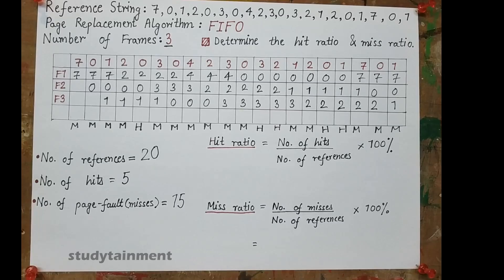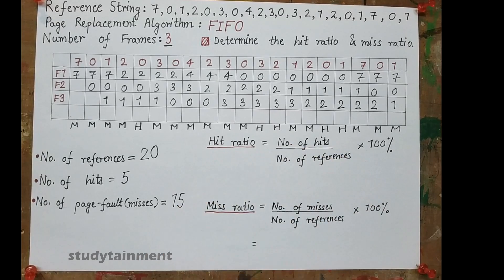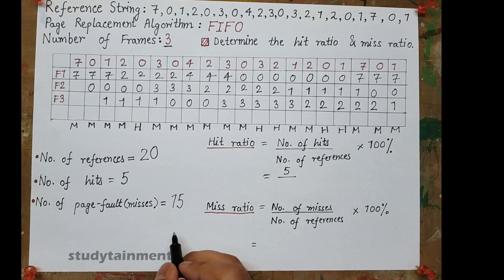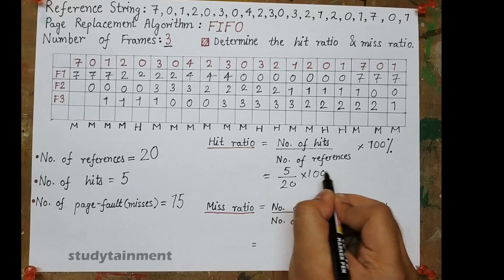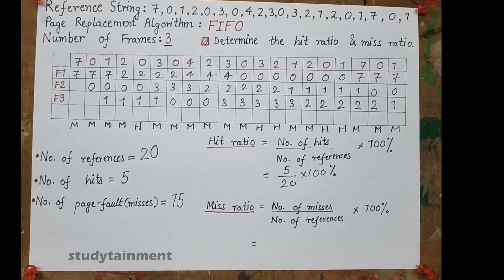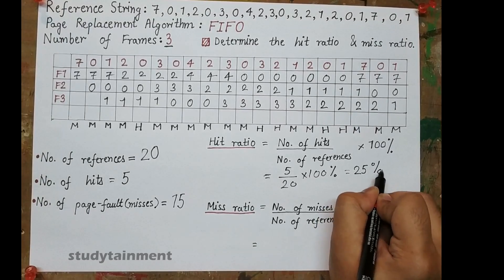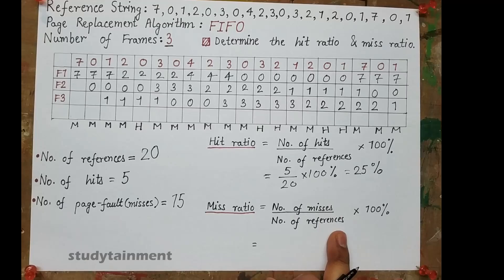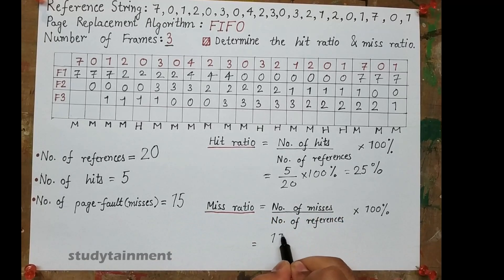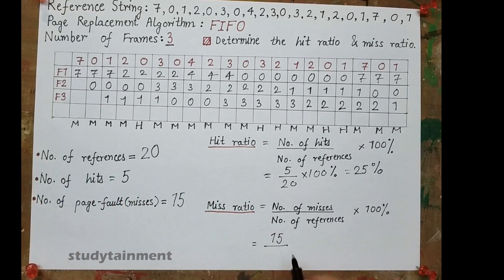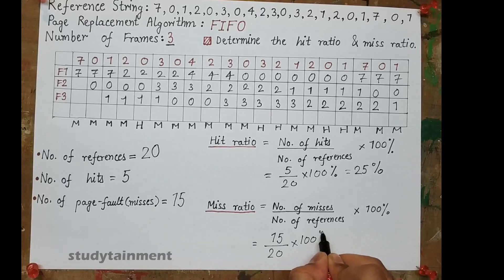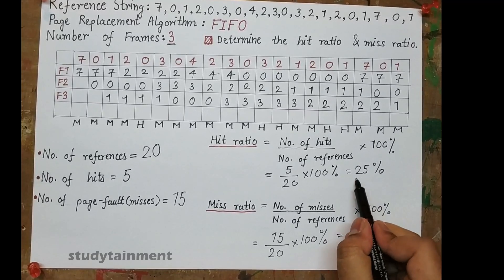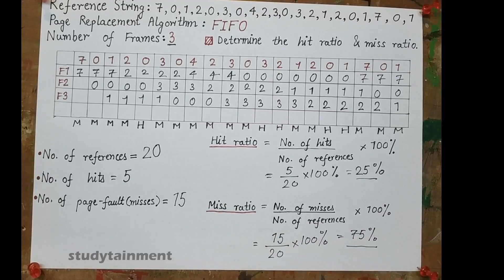The hit ratio is the number of hits divided by the number of references, multiplied by 100. Number of hits is 5, number of references is 20, so the hit ratio is 25%. The miss ratio is the number of misses divided by the number of references — 15 divided by 20 — which is 75%. So the hit ratio is 25% and the miss ratio is 75%.